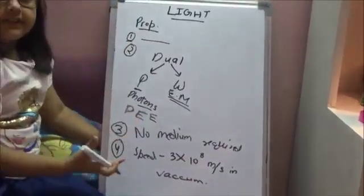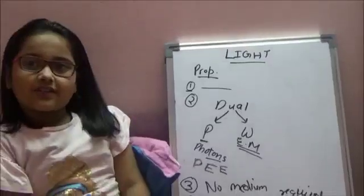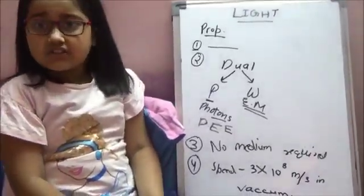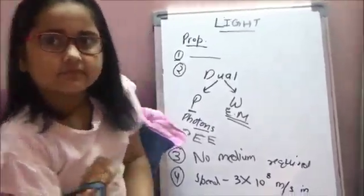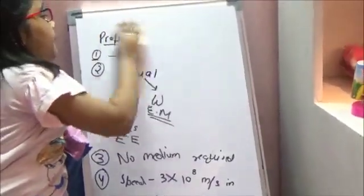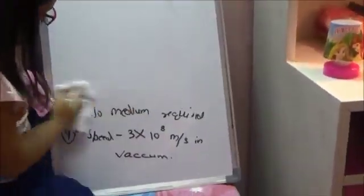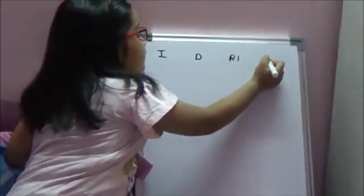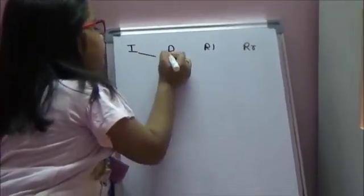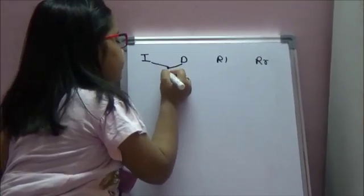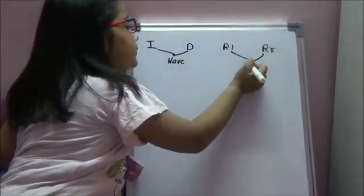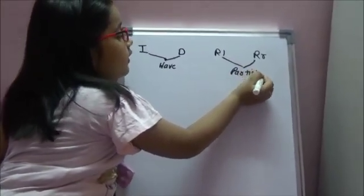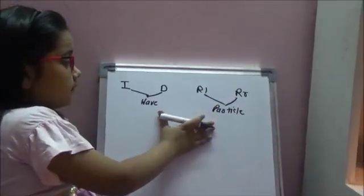Now, those were the properties of light. This chapter talks about 4 phenomena: interference, diffraction, refraction, and reflection. Interference and diffraction can be explained by using wave theory, while reflection and refraction can be explained by using particle theory. Now let's understand each of them one by one.